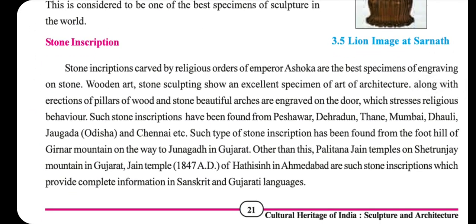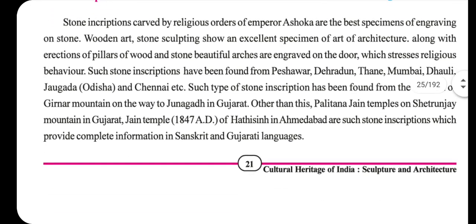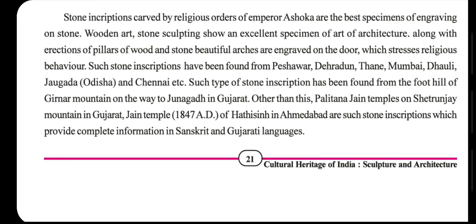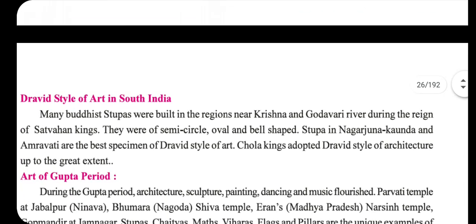Other stone inscriptions have been found in various places such as Peshawar, Dehradun, Thane, Mumbai, and on the foothills of Girnar mountain on the way to Junagadh in Gujarat. Various Palitana Jain temples and the Hathi Singh Jain temple of Ahmedabad also have stone inscriptions that provide complete information in Sanskrit and Gujarati languages.